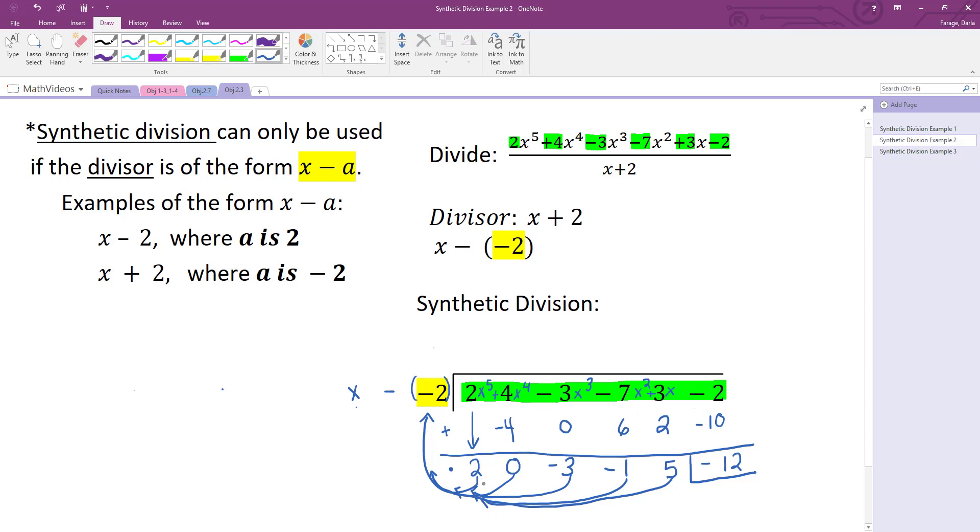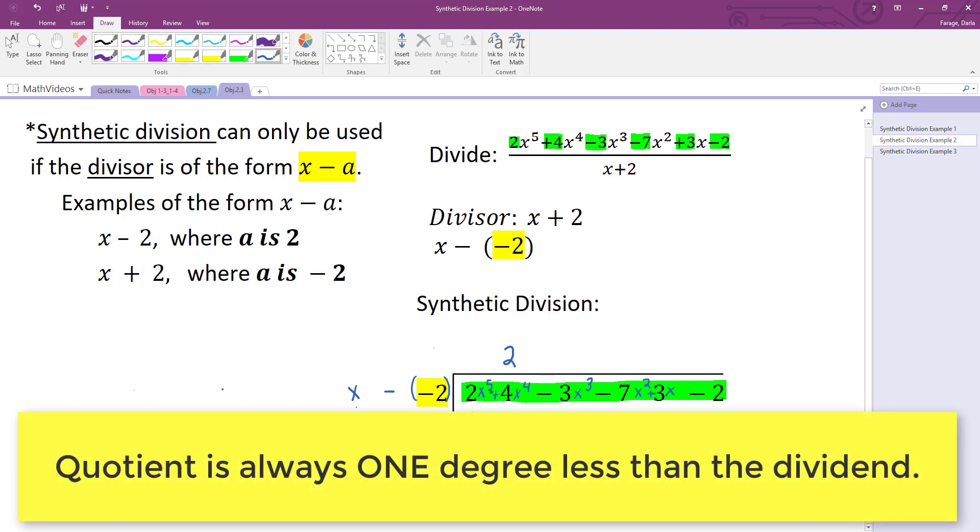And you got, as a result, a quotient that begins with a coefficient of 2. And it's going to be 1 degree less than your dividend. So it'll be 2x to the 4th. And that'll always be the case. It'll always be 1 degree less, because when you take your leading term and you divide it by x, it's going to give you a result of 1 degree less.